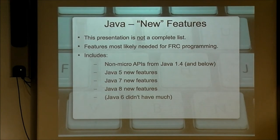I'm covering non-micro APIs from Java 1.4 that I think we're most likely to use. Those aren't new — they've been around forever — but they're new to the robot being able to use them, and features in Java 5, 7, and 8. There were no features in Java 6 of any interest, so we're going to skip that.